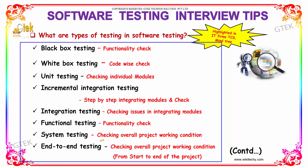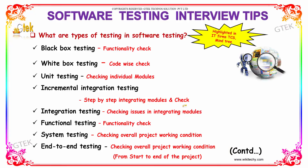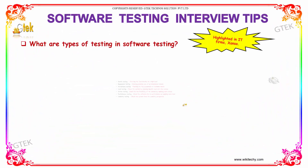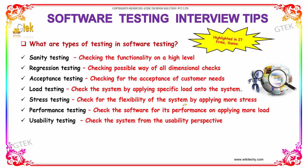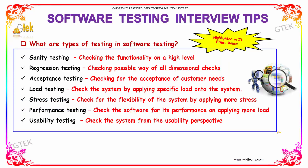System testing is checking the overall project working condition. End-to-end testing is checking the overall project working condition from start to the end of the project. These are the types of software testing, and there are a few more. The other types of software testing include sanity testing.